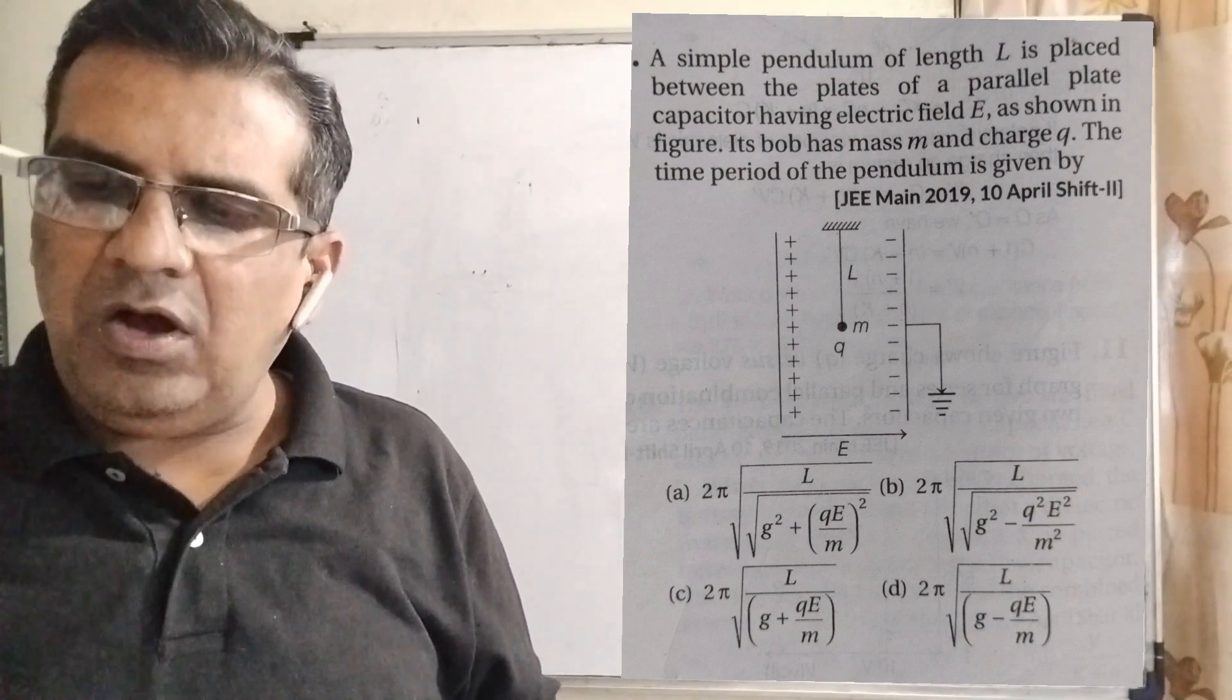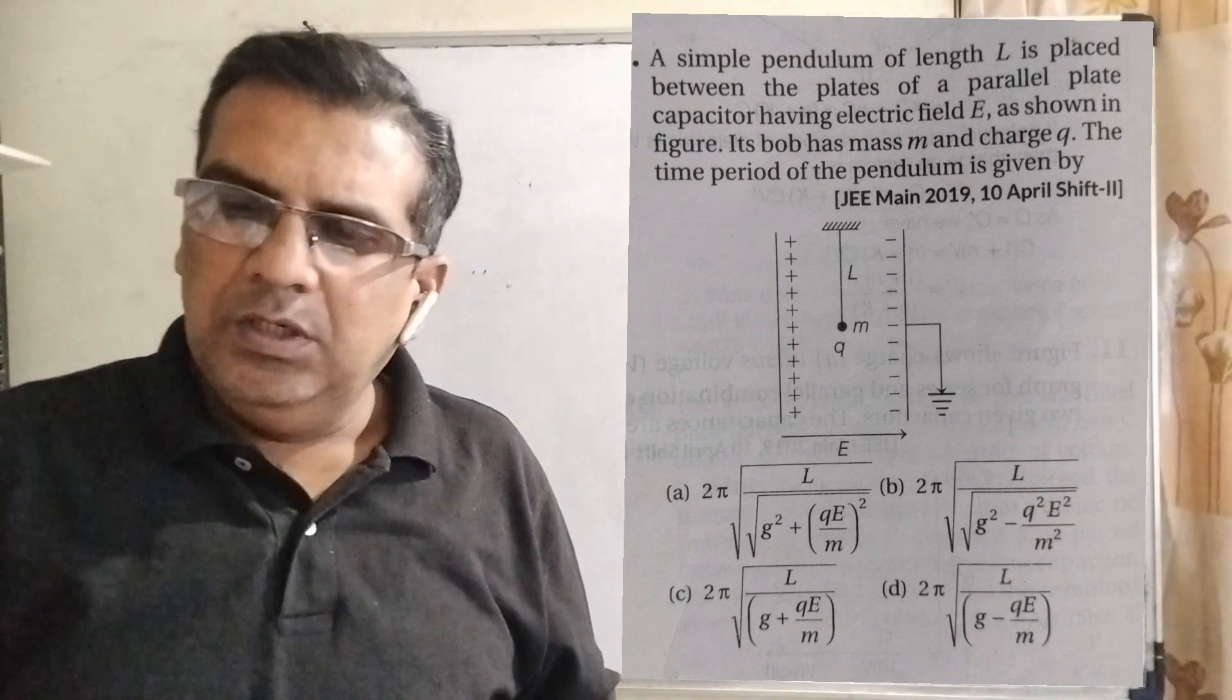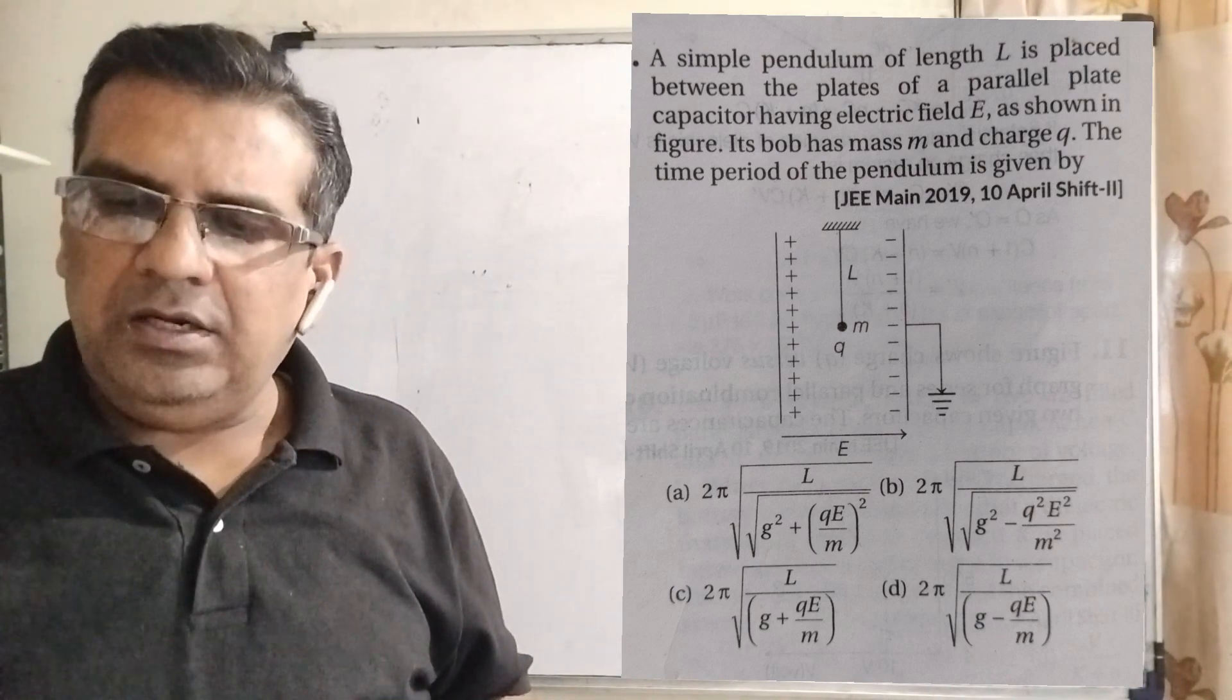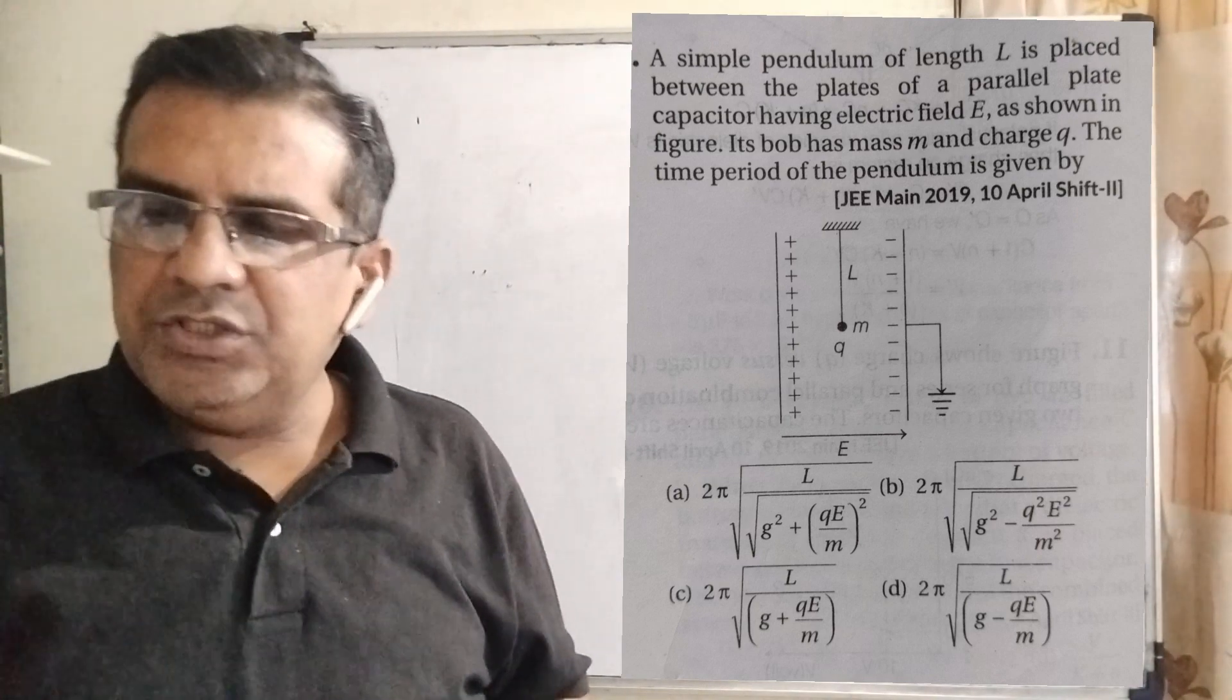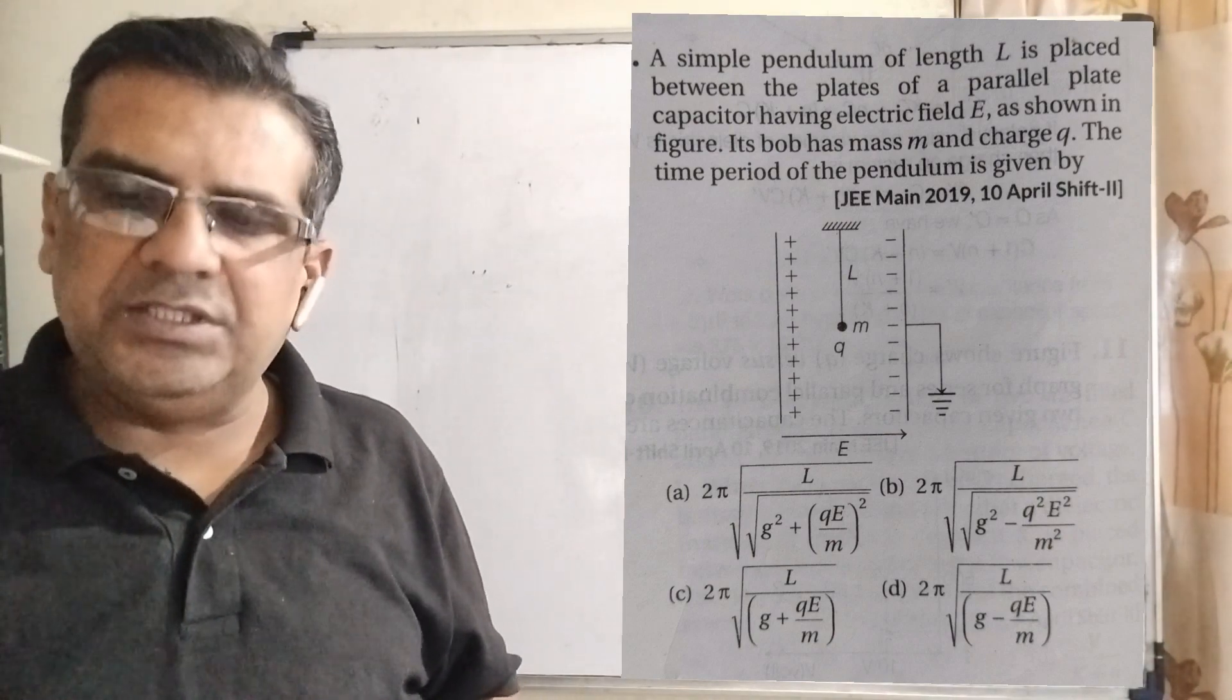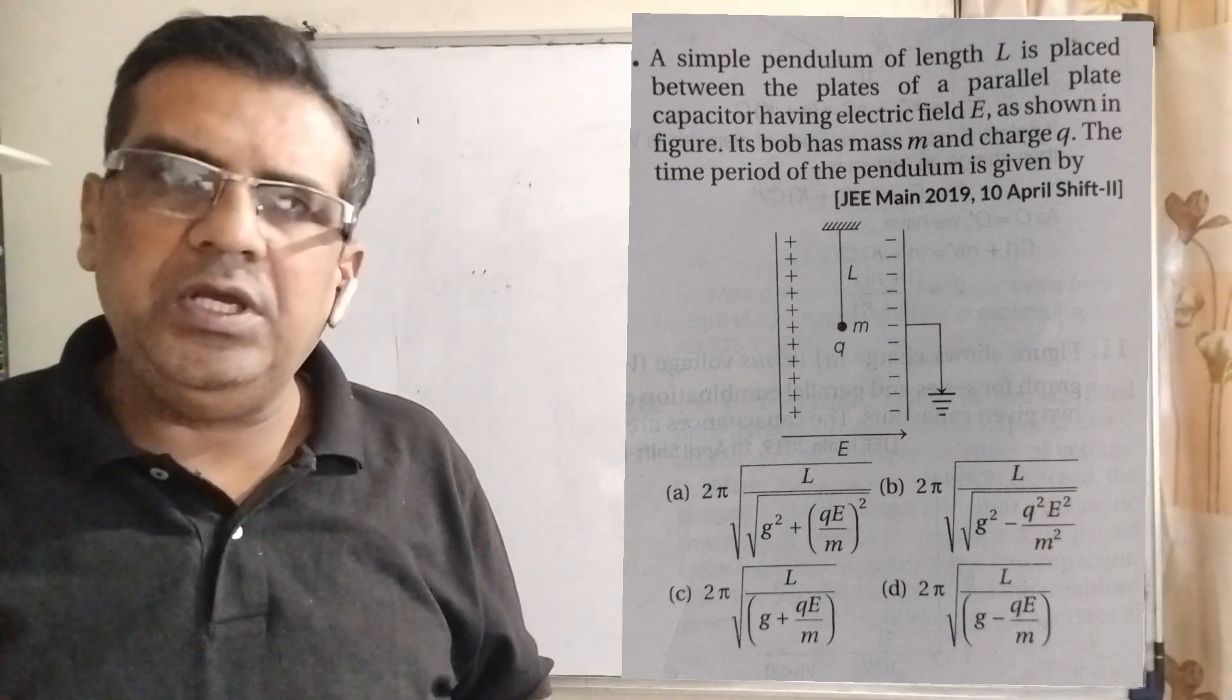The time period of the pendulum is given by, you have four options. First option: 2π√(L/√(g² + (qE/m)²)). Option second: 2π√(L/√(g² - (qE/m)²)). Option C: 2π√(L/(g + qE/m)).